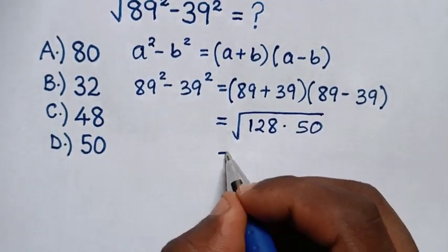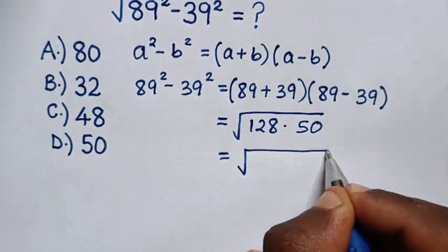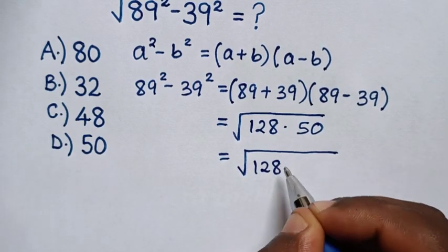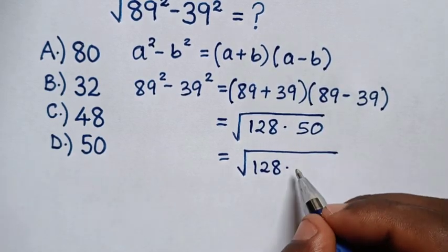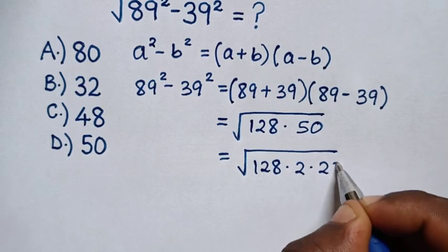Then, it will be equal to square root of 128 times 50, which is the same as 2 times 25.